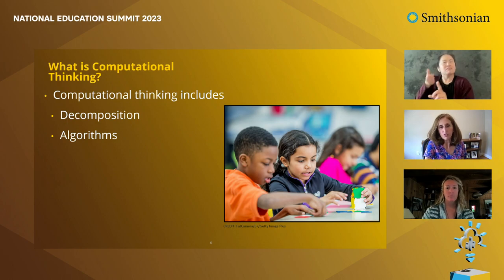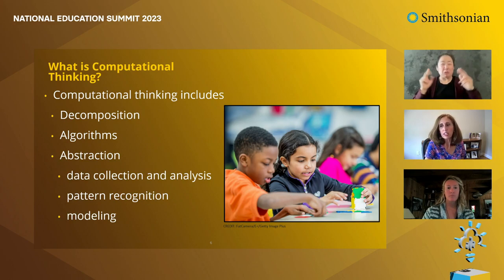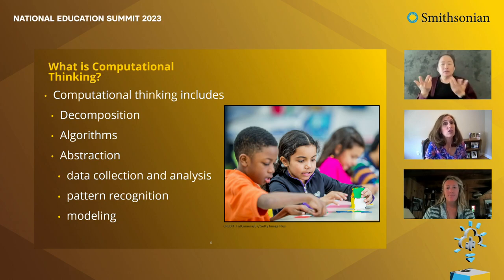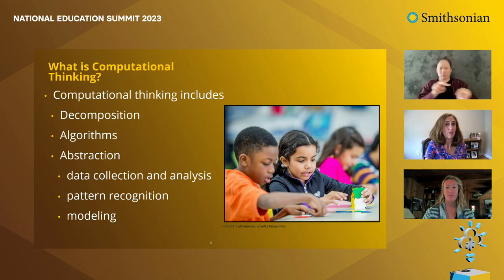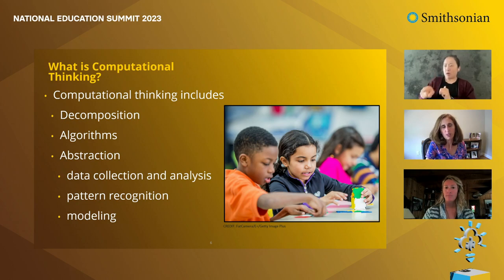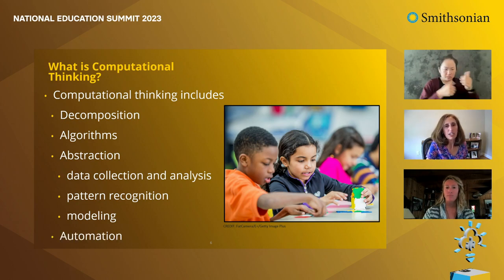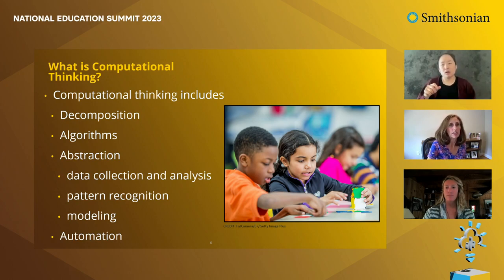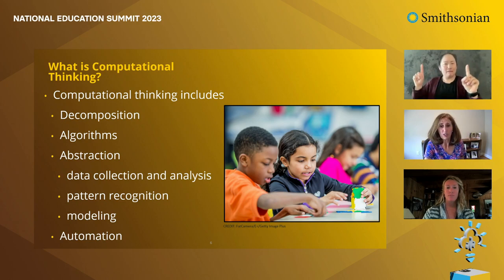The next competency is abstraction — reducing the complexity of a problem and focusing on what's important. This includes looking at and organizing data to figure out what's important, looking for patterns, and modeling different aspects of a problem. And finally, automation — determining if a computer could more efficiently help solve that problem. Now that we've further defined computational thinking, think about what other examples of these skills you're already doing in your classroom.